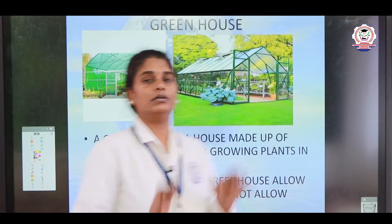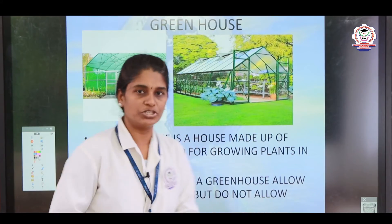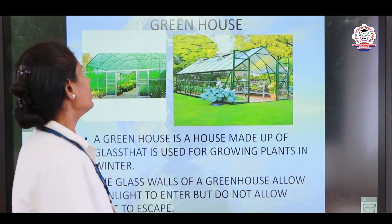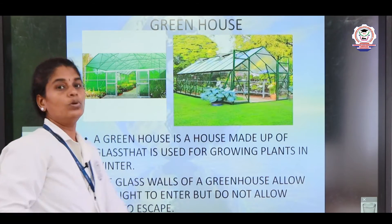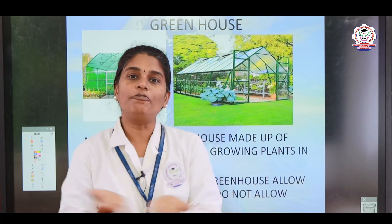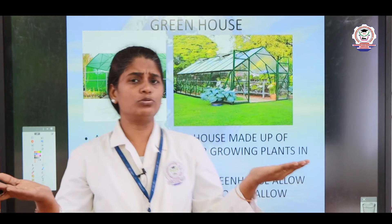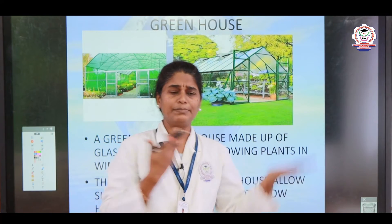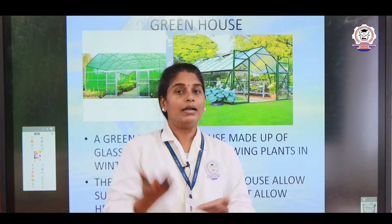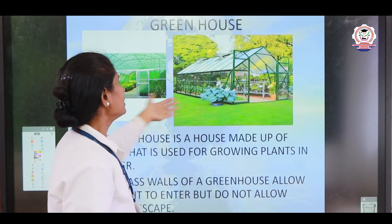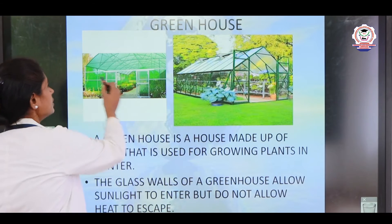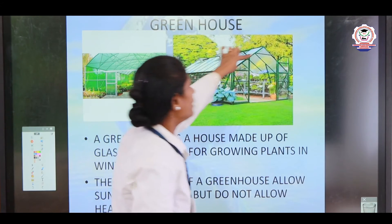Today you have learned about pollution and its different types and how they are caused. Now let's see about greenhouse. What is a greenhouse? A greenhouse is a house made of glass. Usually our houses are made of wood, cement, or bricks, but here the walls of the greenhouse are made of glass.